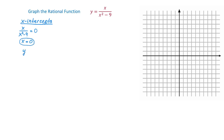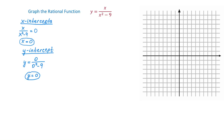Now let's find the y-intercept. The y-intercept is the point where the graph crosses the y-axis and any point on the y-axis has the x coordinate 0. Therefore to find the y-intercept we have to replace each x with 0. So 0 over 0 squared minus 9. 0 divided by negative 9 is still 0. So the y-intercept is 0. This is expected because the point with x and y coordinates both 0 is the origin. Let's plot this point in the rectangular coordinate system.